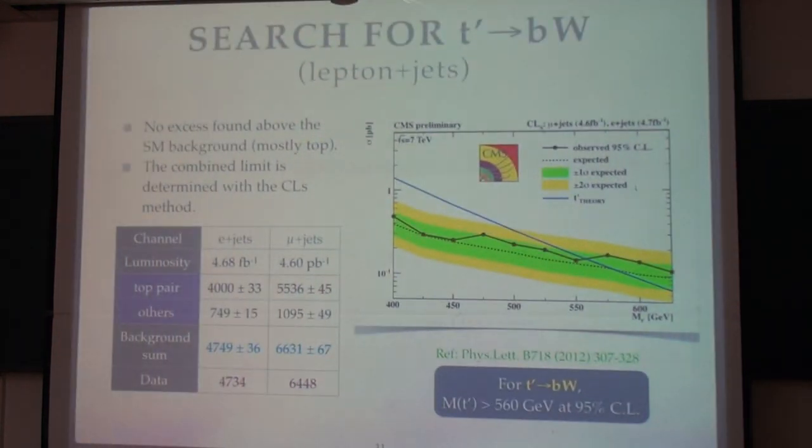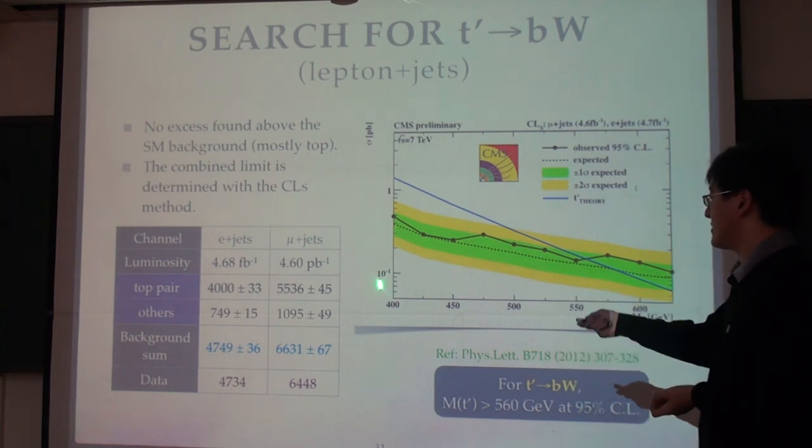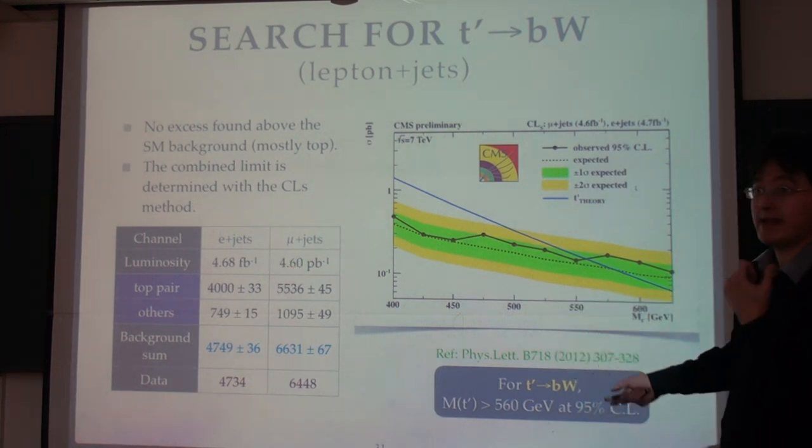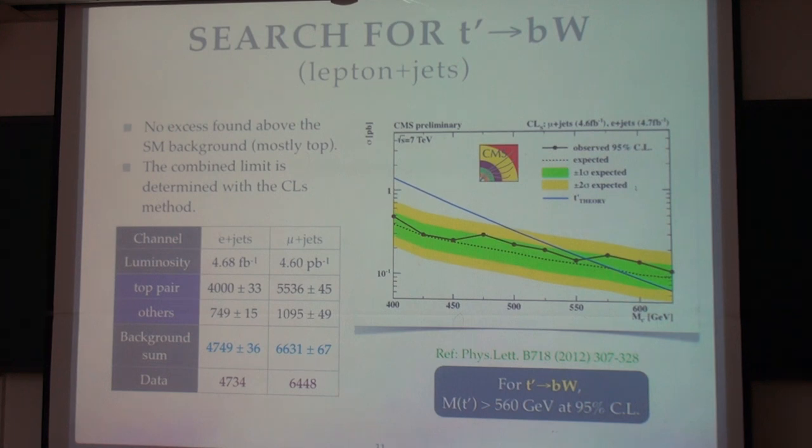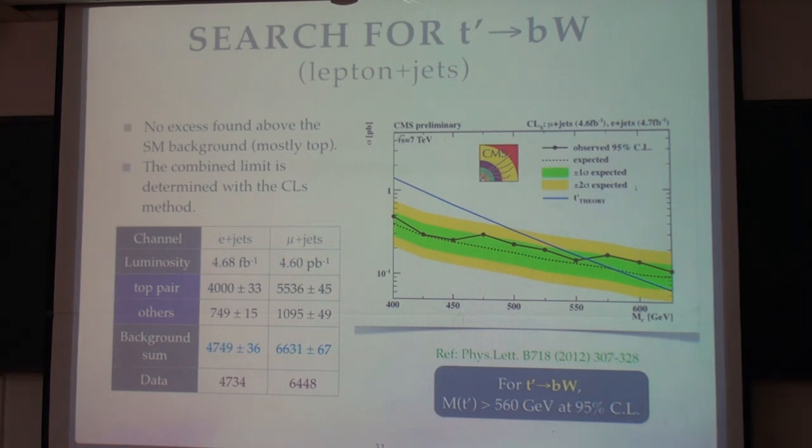Based on this final one-dimensional fit, we can already set a very good limit. However, we can also look at the total number of events we found in these two channels, electron and muon. They are all similar to what we expected from the background, so we don't see strong hint of signal. This gives us a limit of 500 GeV, and the result is already published in PLB.